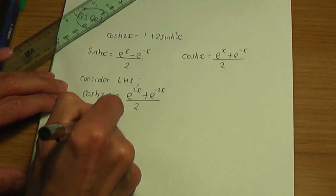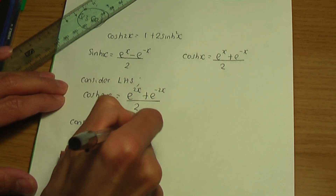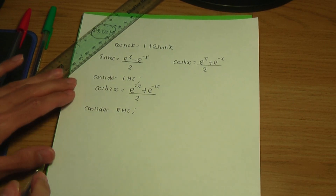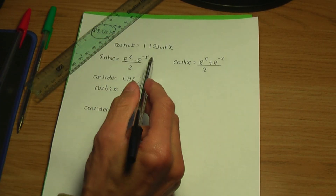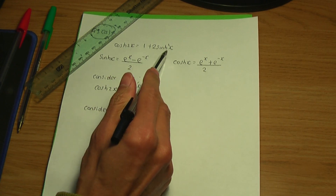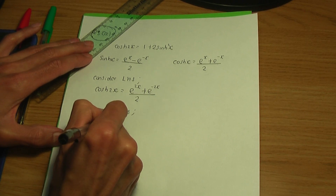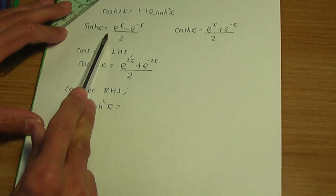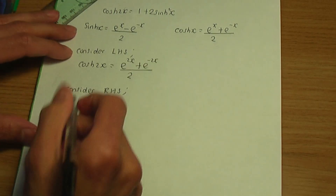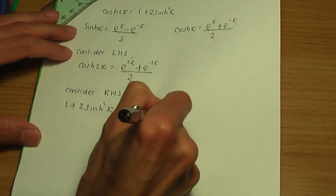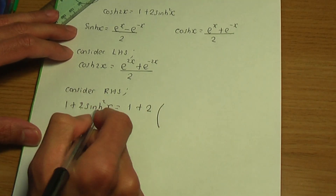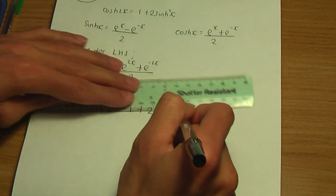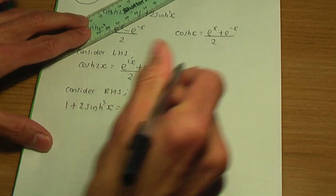Now let's consider the right-hand side. On the right-hand side we have 1 plus 2 hyperbolic sin squared x. Using the definition of hyperbolic sin x, this becomes 1 plus 2 times the quantity e to the x minus e to the minus x divided by 2, all squared.